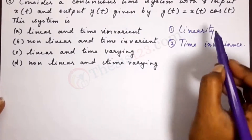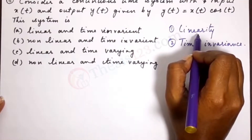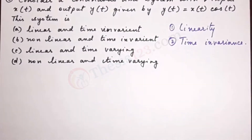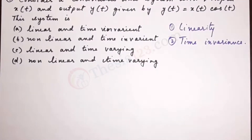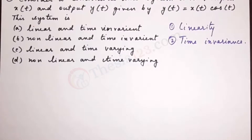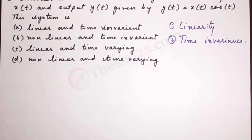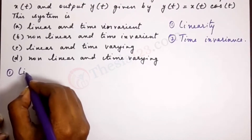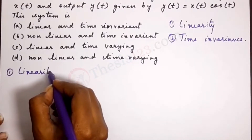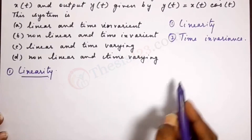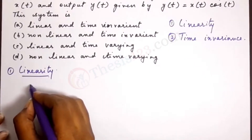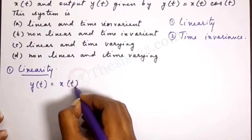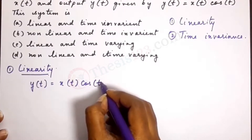There are two conditions to say that a system is linear. One condition is that it must be homogeneous, and the second is that it has to satisfy the additive property. Let's work on linearity first. The function given to us is y(t) = x(t)·cos(t).